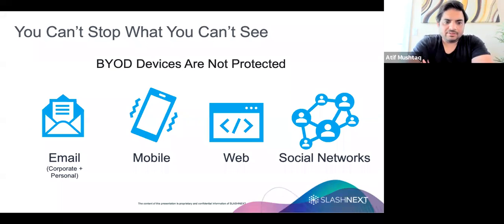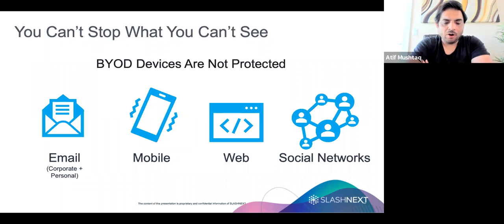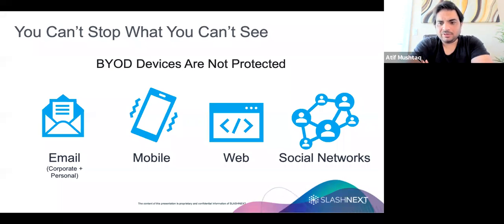In this slide, we have mentioned quite a bit of infection vectors. These are the main vectors. You have corporate email, you have personal email, you have mobile, web, and social network. And if you see all these, even out of these five, your corporate email is where you have protection enabled.